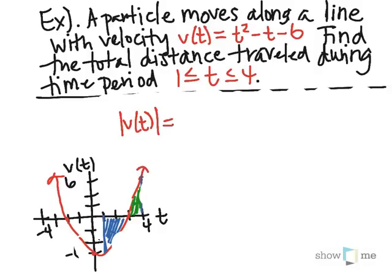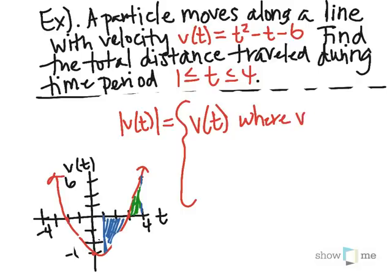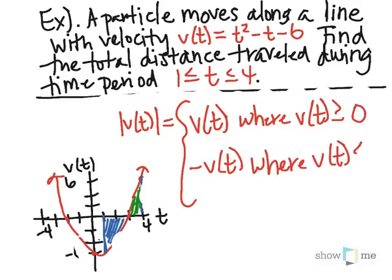The absolute value of the function: if the velocity is positive, the absolute value is just v(t) itself. But wherever the velocity is negative, we take the absolute value by using the negative of the function — so negative v(t) wherever v(t) is less than 0. This way the velocity will always be positive after taking the absolute value, and absolute value of velocity is just speed.